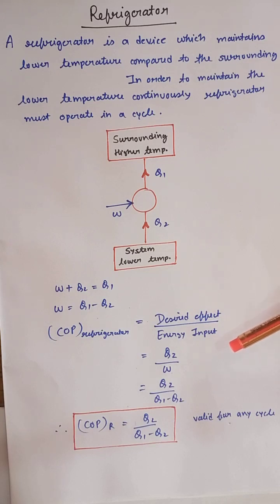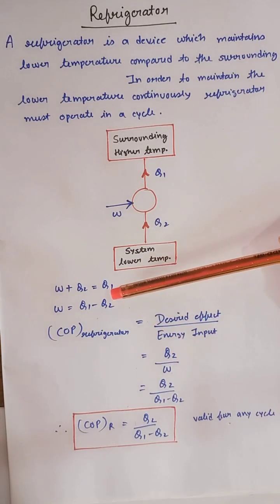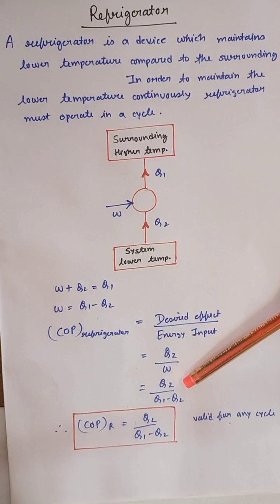Our desired effect is to extract heat from the system, and the energy input is the work done on the refrigerator. So COP equals q₂ upon w. On writing the value of w here, we will get q₂ upon q₁ minus q₂. So COP of refrigerator equals q₂ upon q₁ minus q₂.